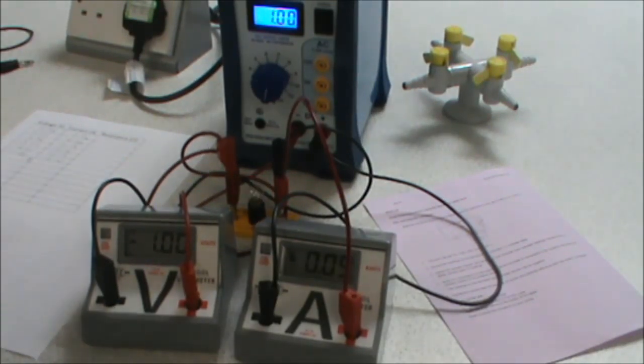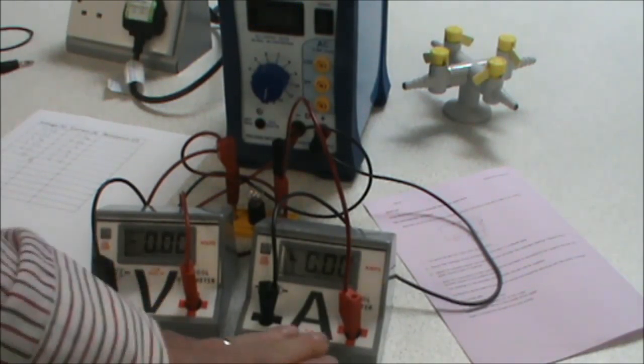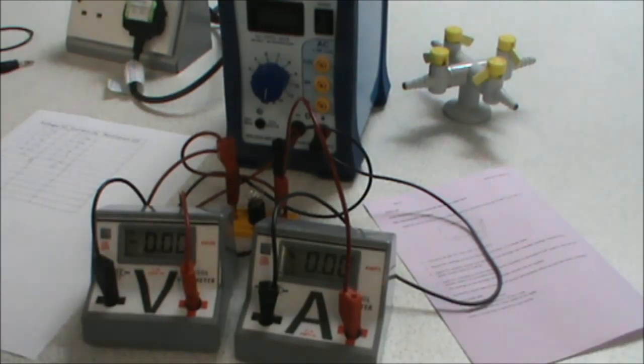I've reached the point on my results table where I'm about to do zero voltage. To take my zero voltage reading, I just turn the power supply off, and I can see that I've got zero volts, which gives me zero current. In order to get my positive voltage readings, all I have to do is swap the connectors on my power supply over.